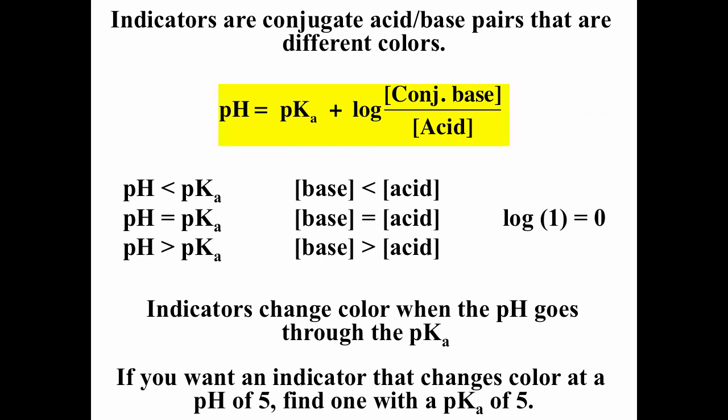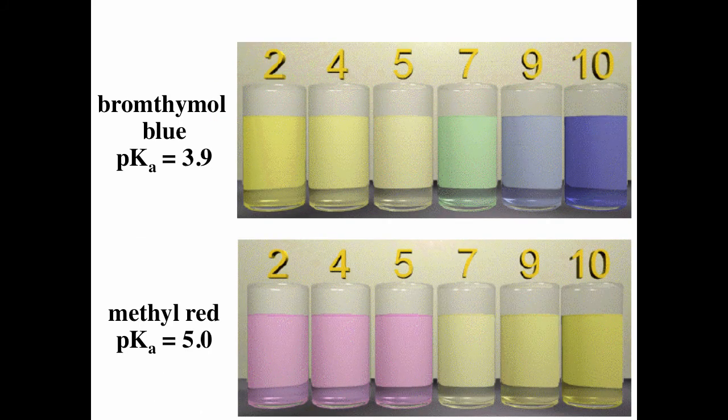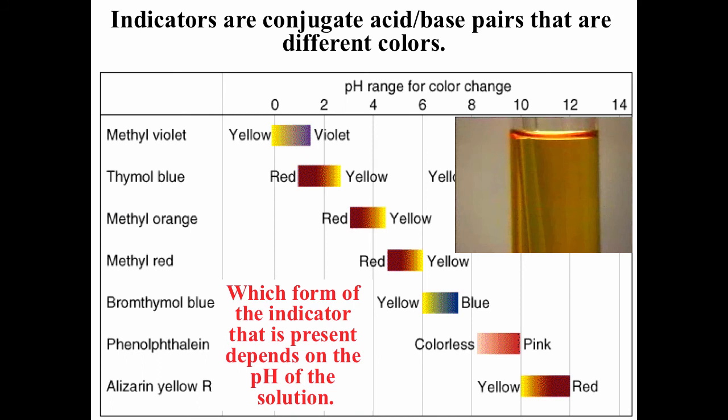Because indicators are composed of a weak acid and conjugate base, you can use the Henderson-Hasselbalch equation. The Henderson-Hasselbalch equation is: pH = pKa + log([base]/[acid]). When the concentration of conjugate base over the concentration of acid equals one, log of one is zero, and that gives you pH equals pKa. A couple other indicators: bromothymol blue has a pKa of 3.9, and methyl red has a pKa of 5. Which form of the indicator is present depends on the pH of the solution relative to the pKa of the indicator.